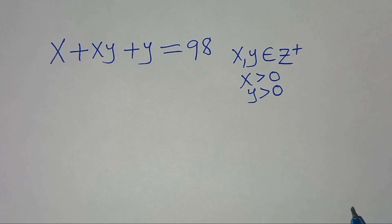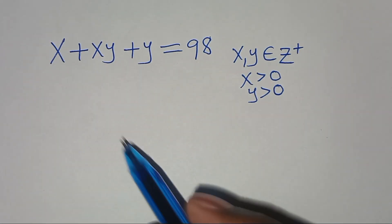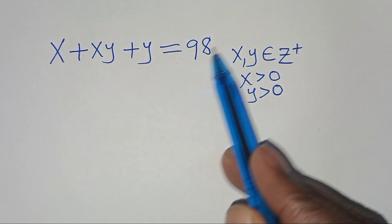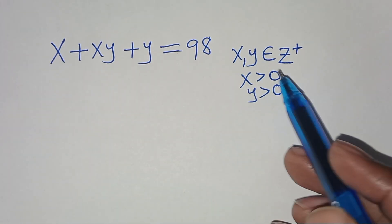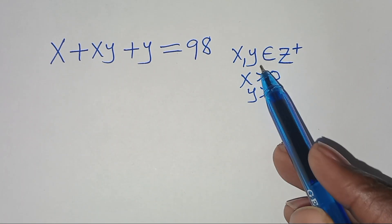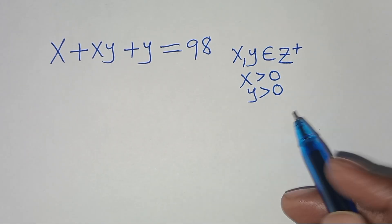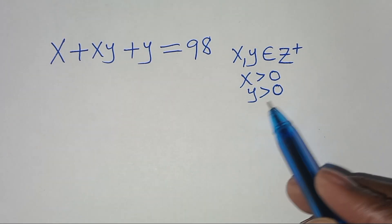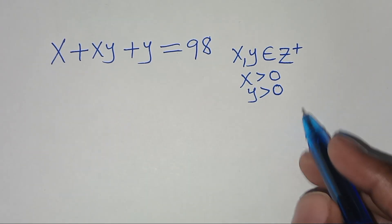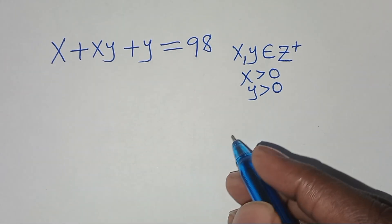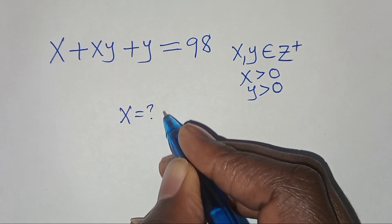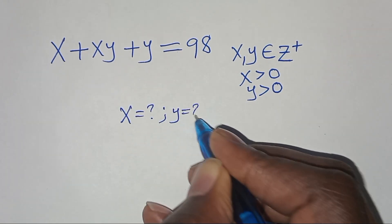Hello everyone, you are welcome to solve this nice algebra problem, which is x plus xy plus y, this is equal to 98. Given that x and y are members of positive integers, and that x is greater than 0, and y is greater than 0. What is the value of x, and what is the value of y?